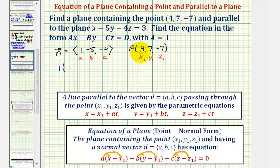times the quantity (x - x₁), that'd be (x - 4), plus b, and since b is -5, we have -5 times the quantity (y - y₁), that's (y - 7),